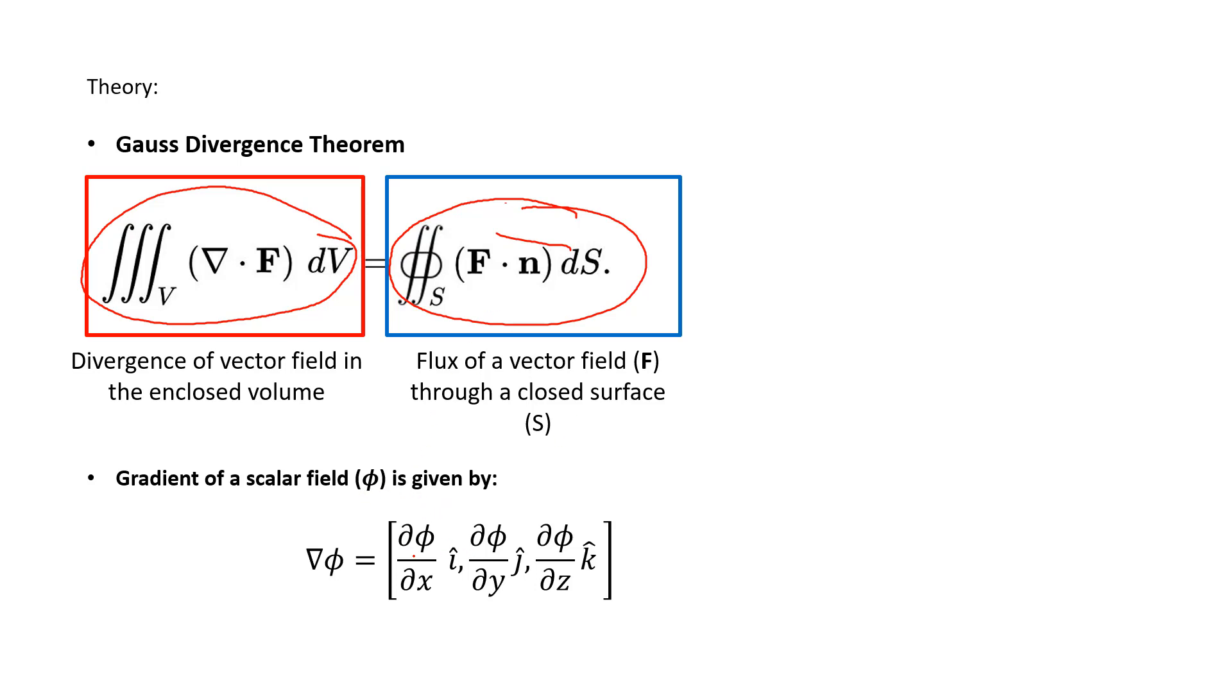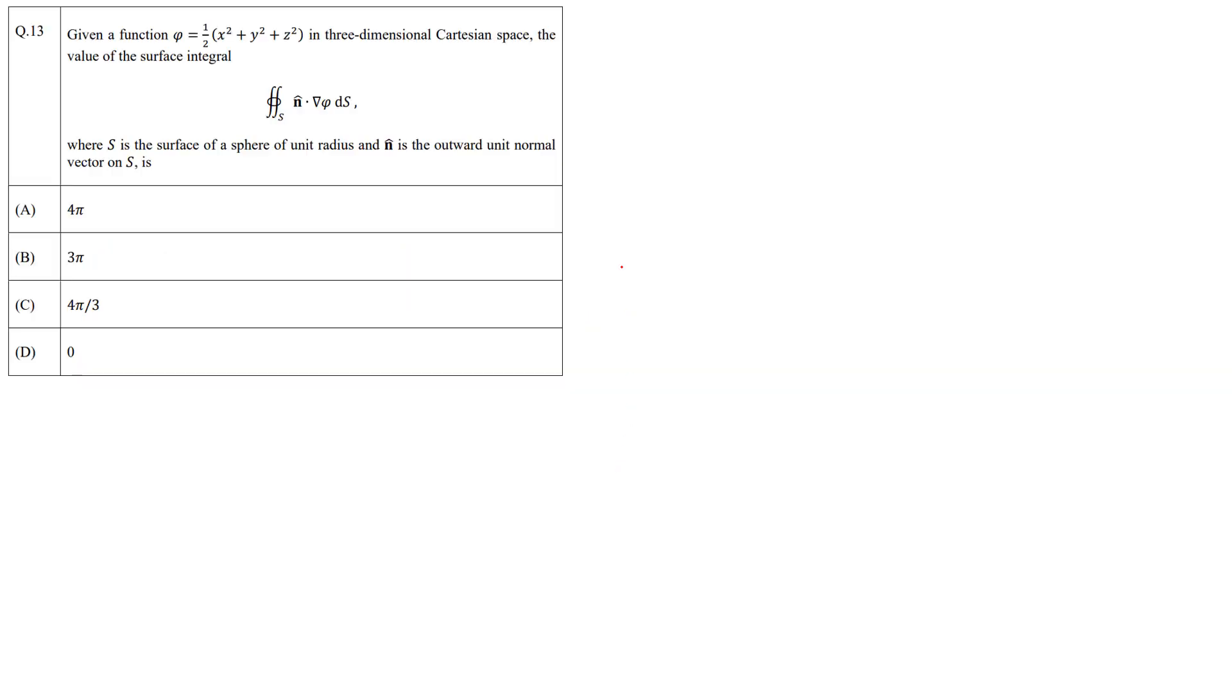Also you need to know the gradient of a scalar field φ is given by this expression. The gradient of a scalar field φ will be a vector quantity and have these three components: ∂φ/∂x î, ∂φ/∂y ĵ, and ∂φ/∂z k̂. Now coming to the solution.